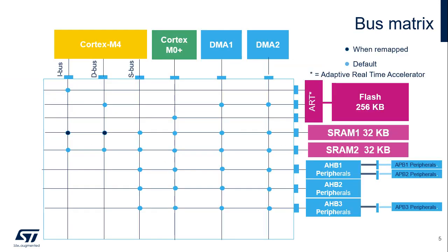Here we have the STM32WL5 bus matrix. The bus masters are shown on top: the Cortex-M4 core, the Cortex-M0+ core, and the two DMA controllers communicate with the bus slaves shown on the right via the circled intersections. The flash memory is read through the accelerator. Cortex-M4 instructions are fetched through the instruction bus, and literal pools are read through the data bus. SRAM1 is accessed by default by the system bus, and can be accessed through IBUS and D-BUS when remapped at address 0, shown by the dark blue circles, in order to increase performance.